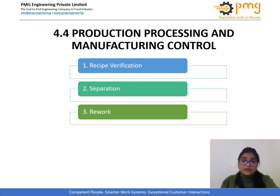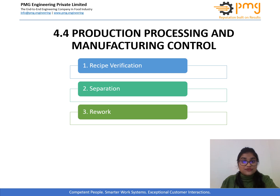Another important parameter which is generally overlooked is rework. There must be a defined procedure in place for the handling of rework in the production. Ideally, the principle should be identical into identical — that is, rework should go into another batch or run of the same product. For example, oil used for cooking allergenic foods like shellfish or breaded or battered products should not be used for cooking products that do not contain allergens without undergoing a validated filtration step.